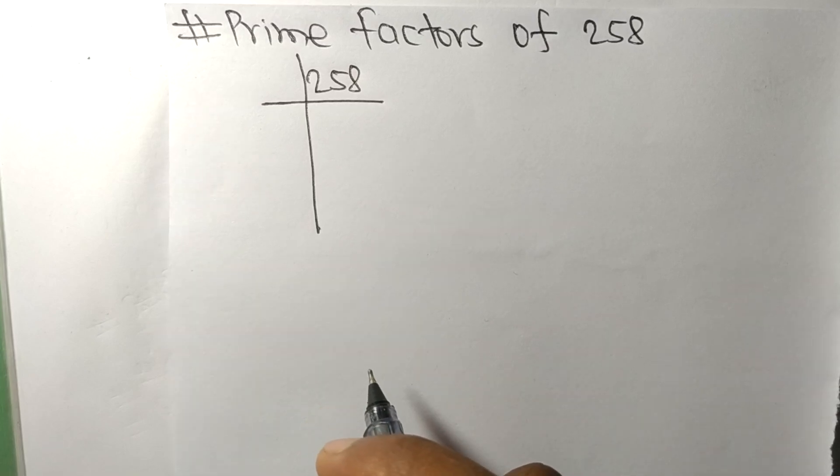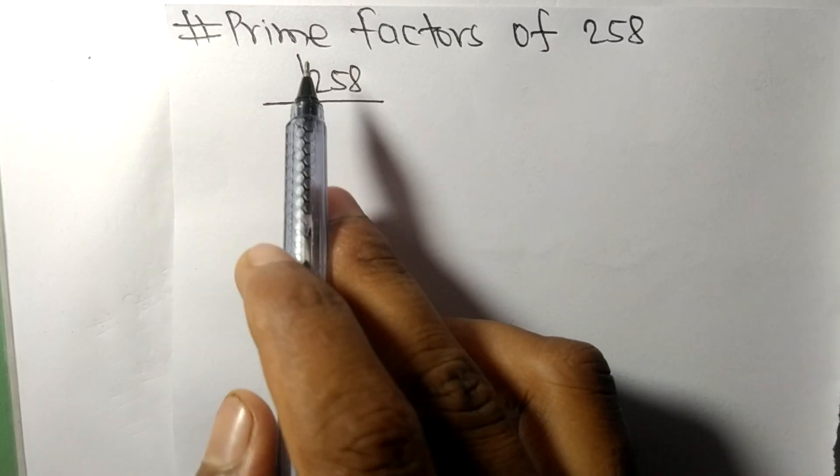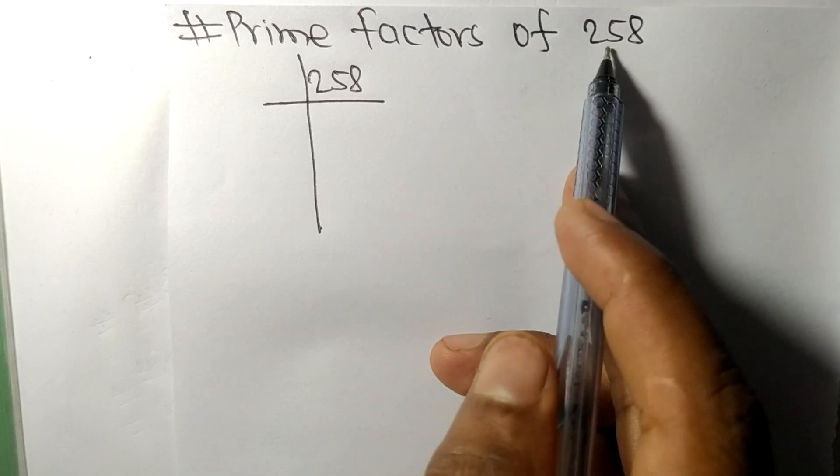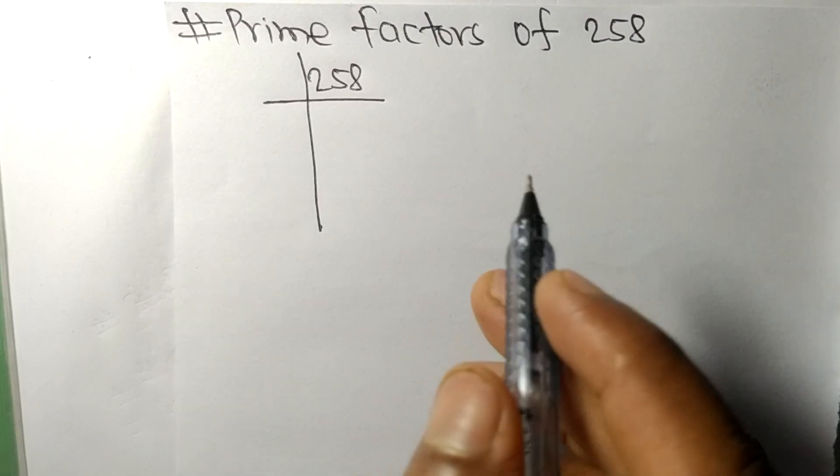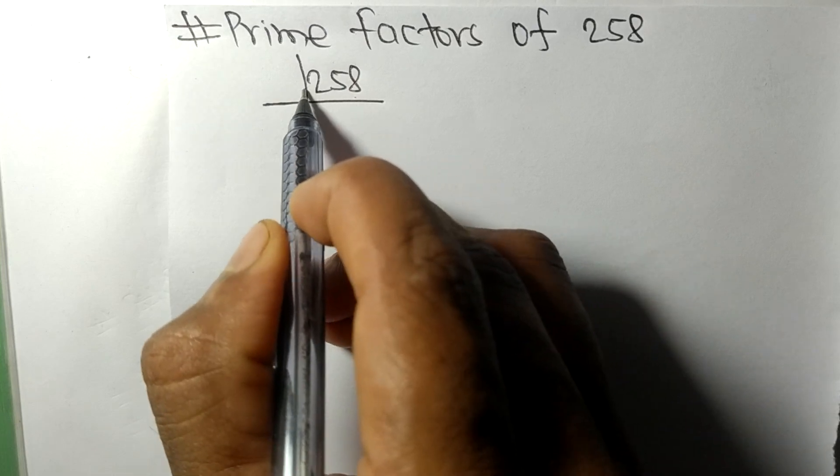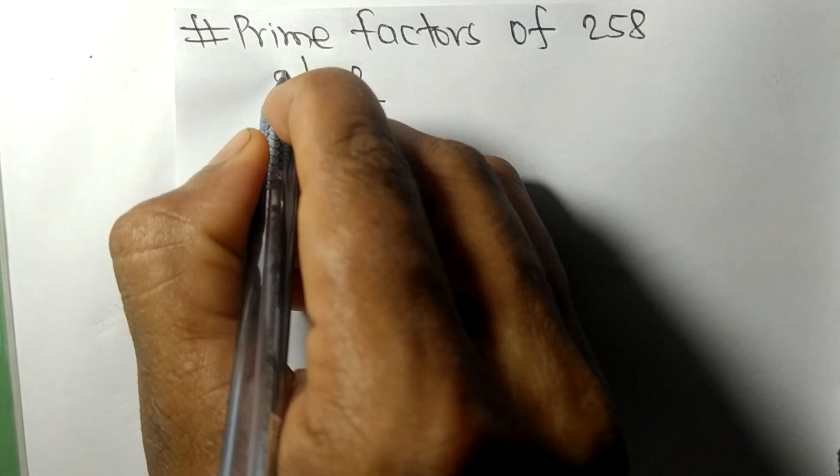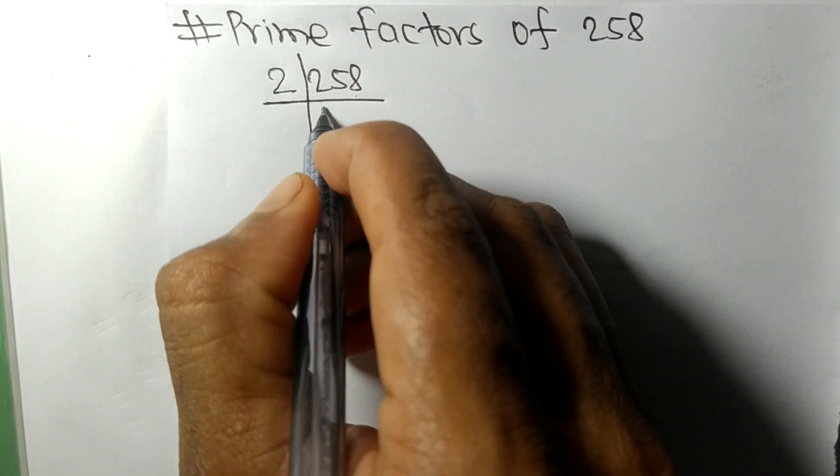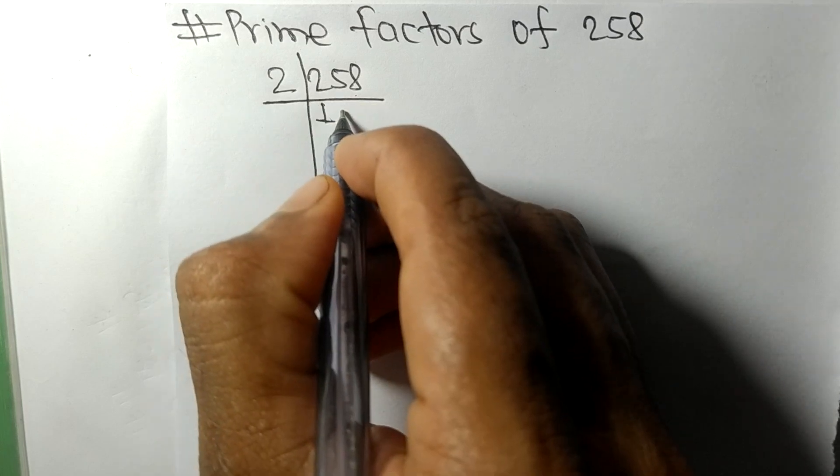Today in this video we shall learn to find the prime factors of 258. It contains an even number 8, so this whole number is divisible by 2. 2 times 1 means 2, 2 times 2